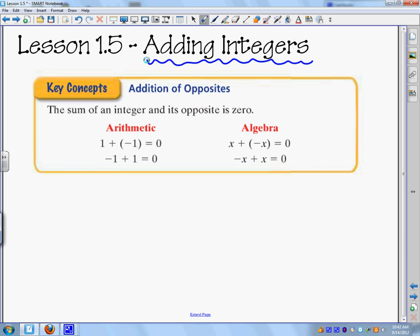Adding integers. This first key concept is a really easy one. All it states is that the sum of an integer and its opposite is zero. So negative 1 plus 1 is zero. Very simple.